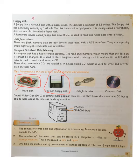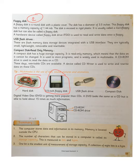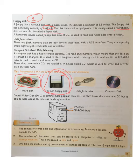A floppy disk is a round disk with a plastic cover and a diameter of 3.5 inches, which is why it is called a 3.5 inch floppy. It has a memory capacity of 1.44 MB — very low by today's standards, but long ago that was considered a lot. It is encased in rigid plastic and is called a micro floppy disk. Inside the plastic body there is a thin magnetic tape in a square box where your files are stored.